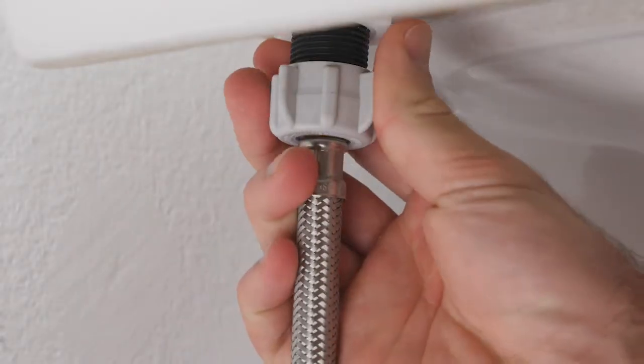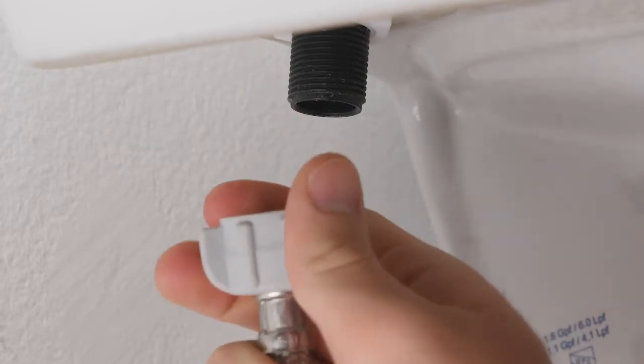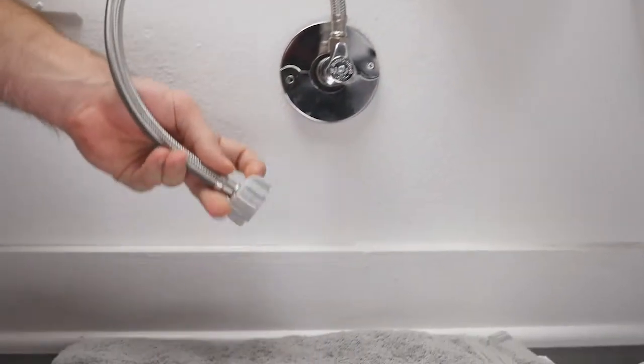Unscrew the flexible water supply line from your fill valve at the toilet. You may want a small bucket or towel handy to catch any residual water.